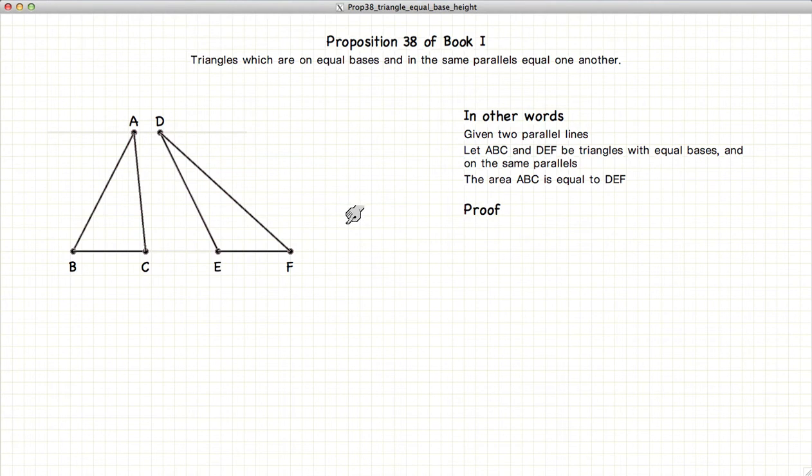So let's begin. The first thing we're going to do is construct a line parallel to AC starting at point B, using Proposition 31.